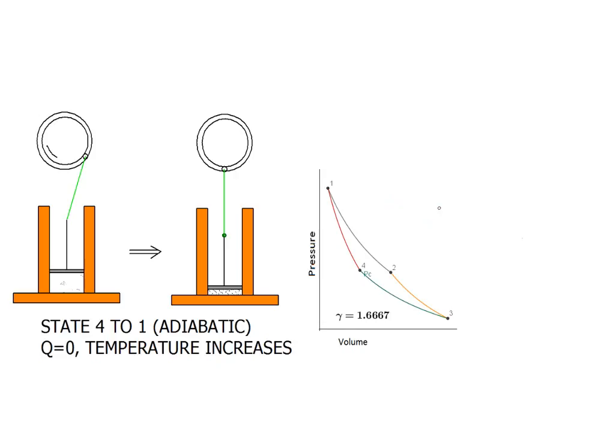As we go from state four back to state one, the flywheel continues compression of the gas but now with a completely insulated cylinder thus causing temperature to rise in the adiabatic gas. In the adiabatic gas compression no heat transfers, therefore temperature must go up.